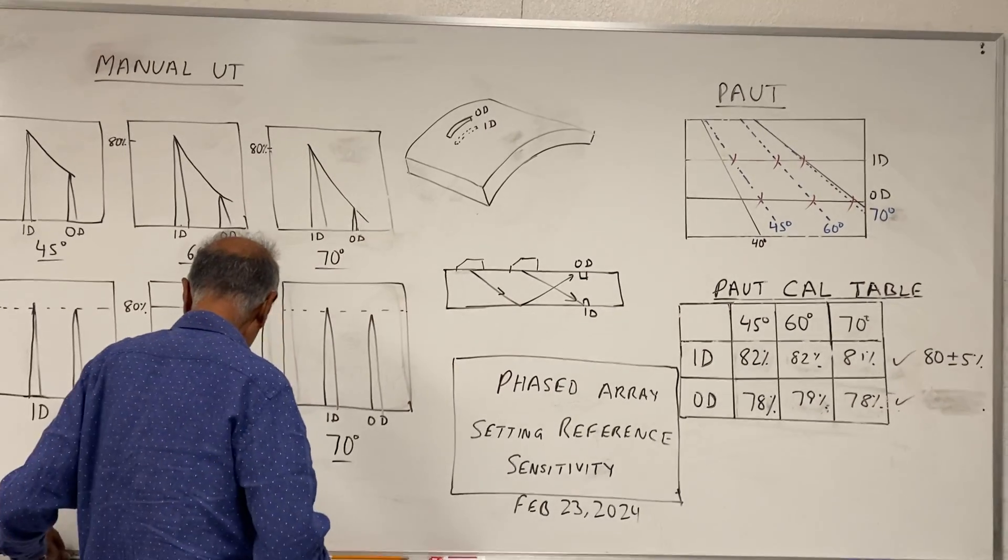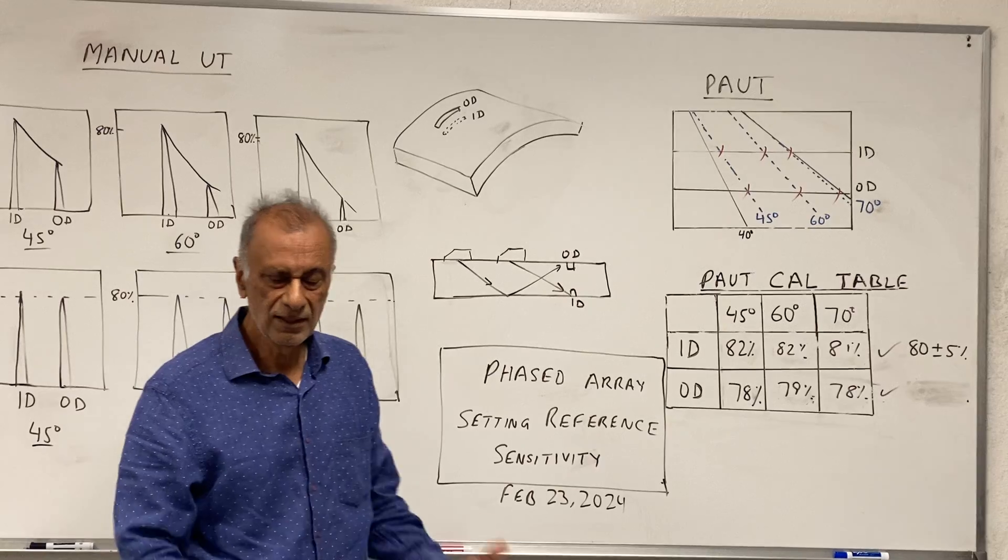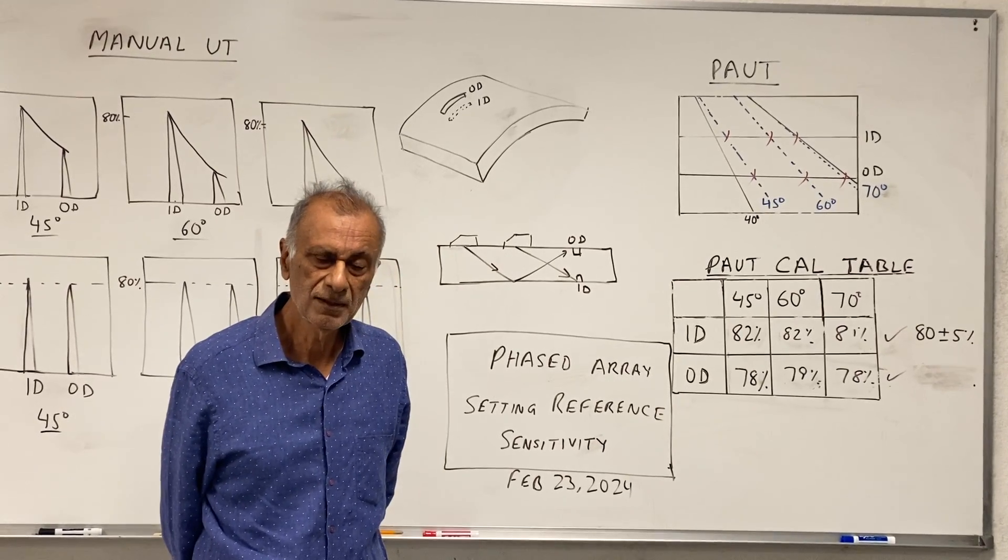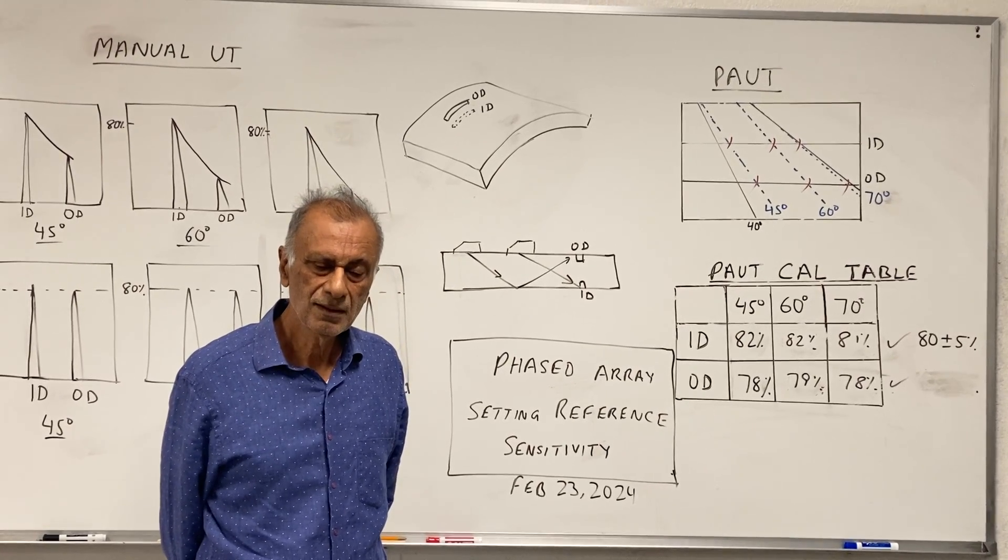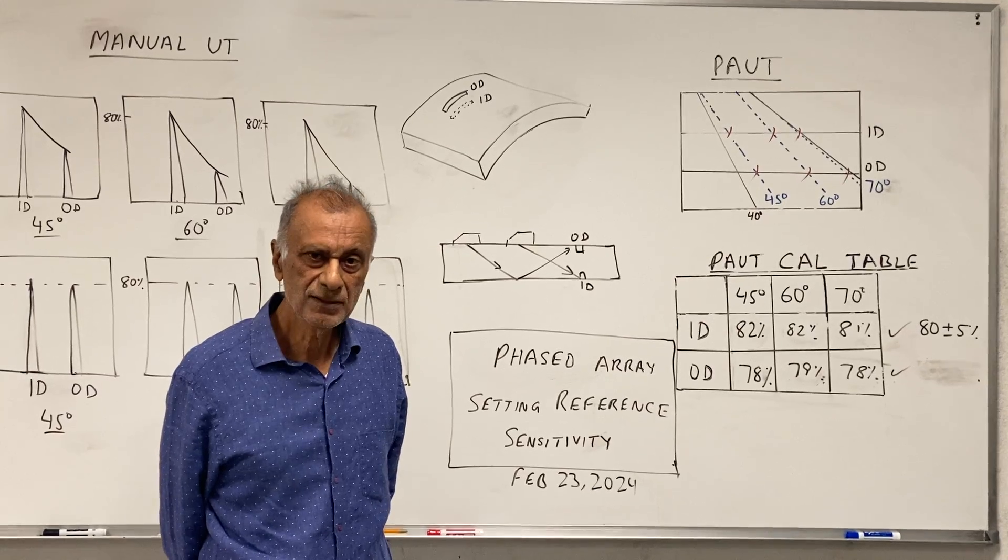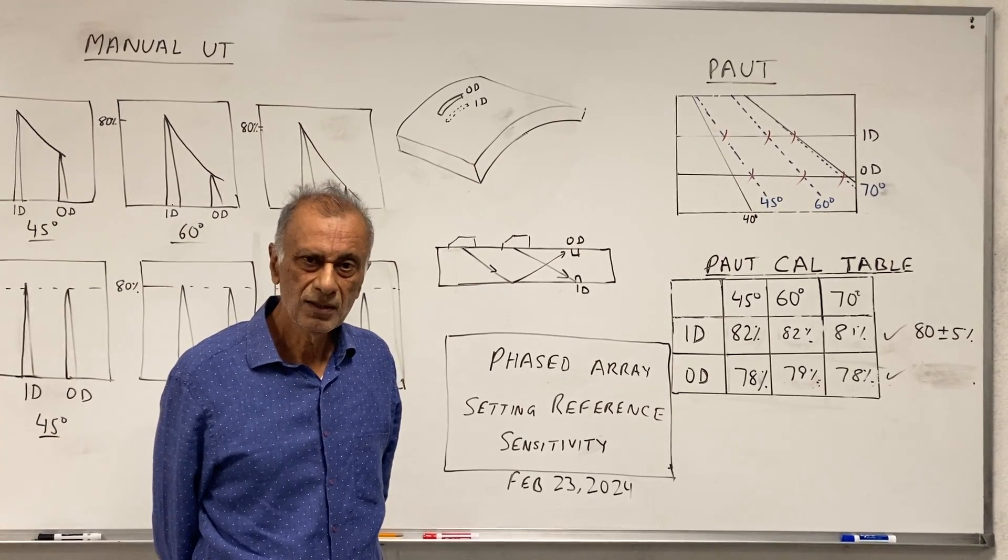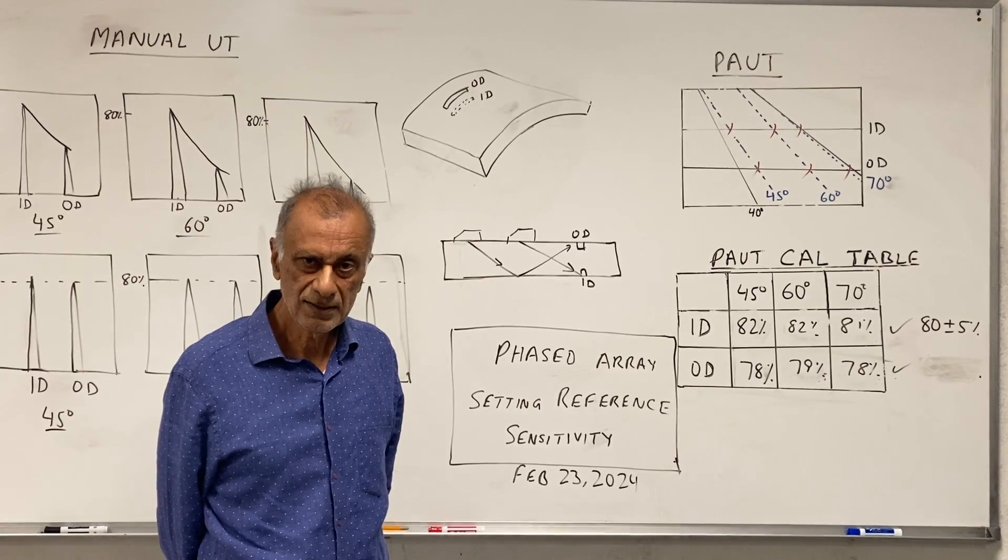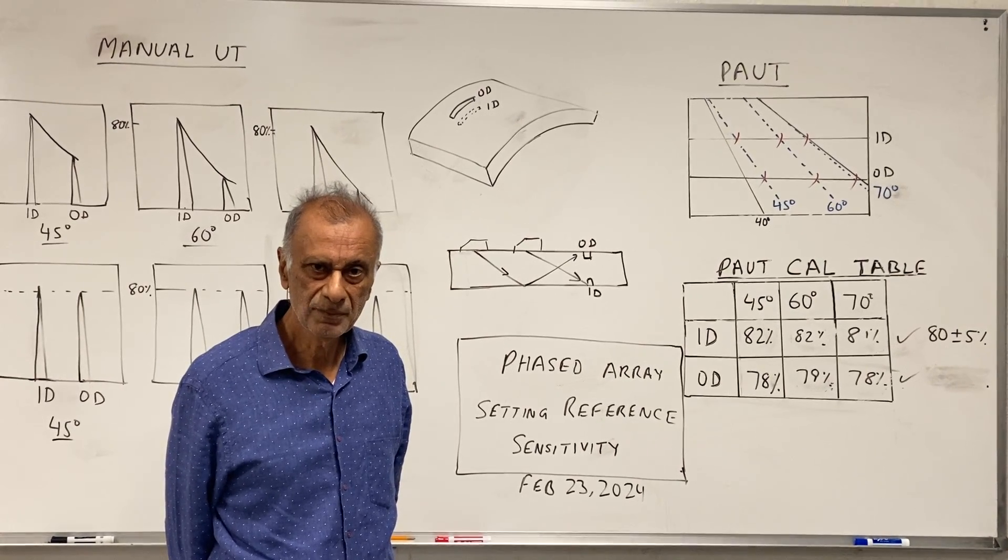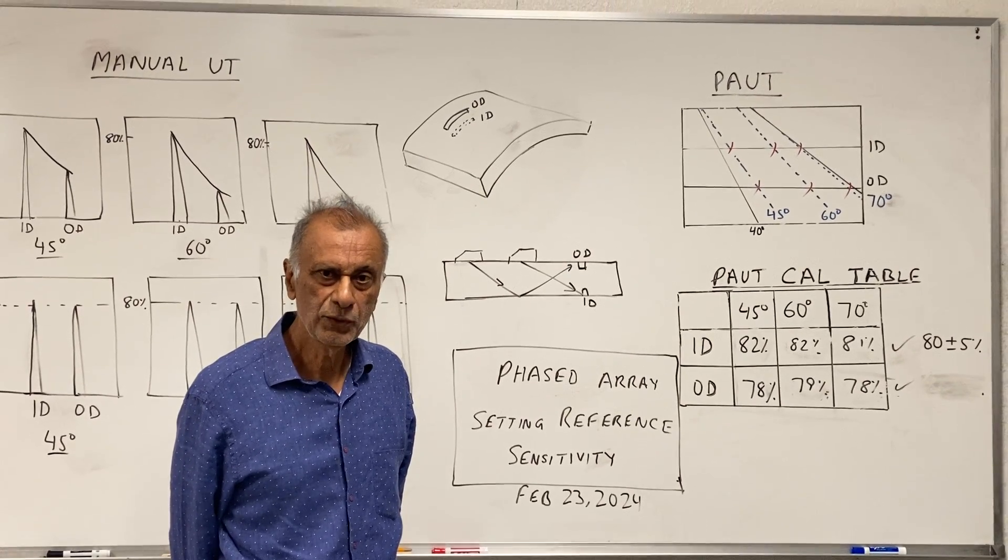So I hope you got the idea of making the phased array calibration. Remember, for piping inspection, calibration should be done straight away on the calibration block with the notches. That's the way it should be done. Thank you and have a nice day.